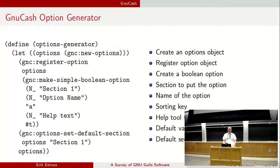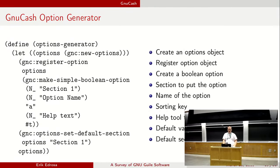Let's look at the options generator. The options generator creates a new options object, and with this you can register a bunch of options. In this example, we create a simple Boolean option and put it in section one — that's where in GnuCash when you go to the options it has a bunch of pages where you can place your different options. We give it a name, options name, and help text. There's also a sorting key which determines where it's placed in the option menu, and we give a default value of true.